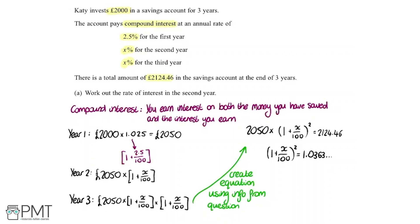I'm then going to square root both sides. On the left hand side, I'm left with 1 plus x over 100 equals the square root of 1.0363 dot dot dot. Putting that into the calculator we get that is 1.01799 dot dot dot. If I subtract 1 from both sides, we get that x over 100 equals 0.01799 dot dot dot.